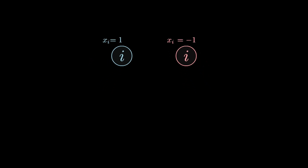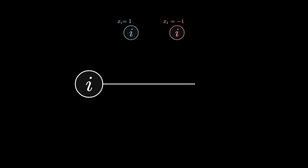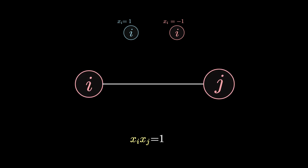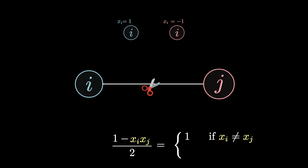To make things more formal, we assign to each node a variable xi that encodes the color of that node. We can take one to mean blue, and minus one to mean red. For two nodes i and j, xi times xj equals one if and only if xi equals xj, and equals minus one otherwise. So if you want to know whether an edge is broken by the cut, we can look at the quantity (1 − xi·xj)/2, which is a binary variable equal to one if the edge is broken, and zero otherwise.